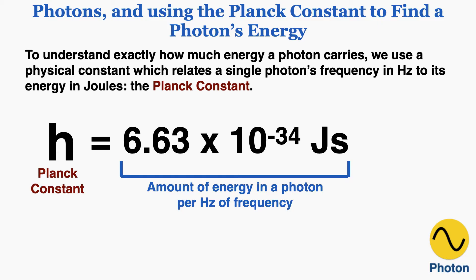So if a photon's frequency is 1 Hertz, the amount of energy it contains is exactly 6.63 times 10 to the negative 34th joules. If a photon has a frequency of 2 Hertz, its energy is 2 times the Planck constant, and if it's 5 Hertz, it's 5 times the Planck constant. So the Planck constant is the energy per frequency of the photon, and the equation for it is the energy a photon contains over the frequency of the photon.